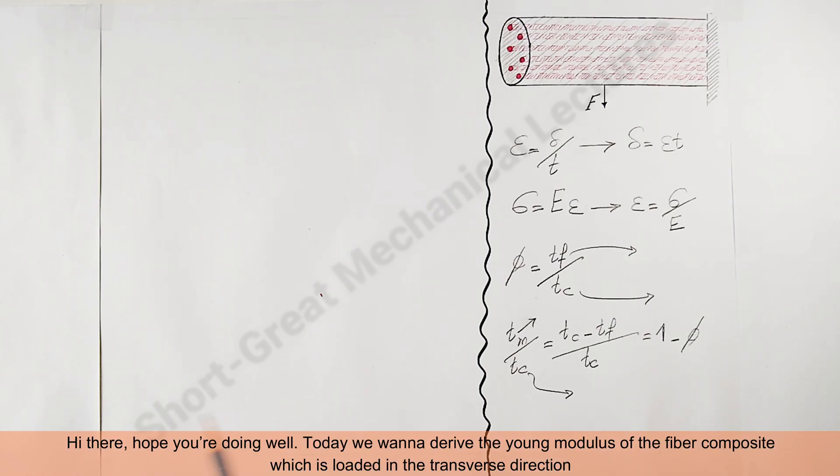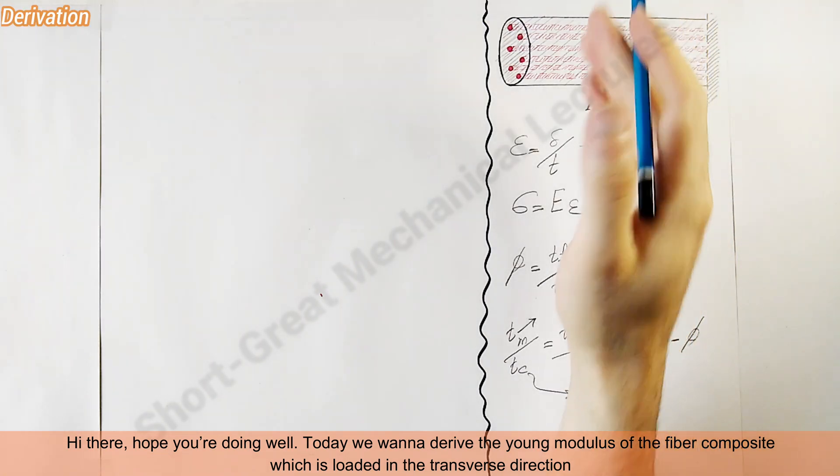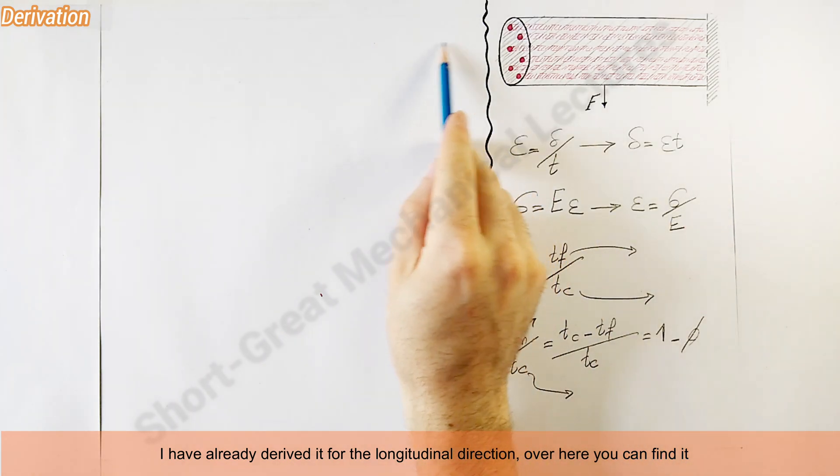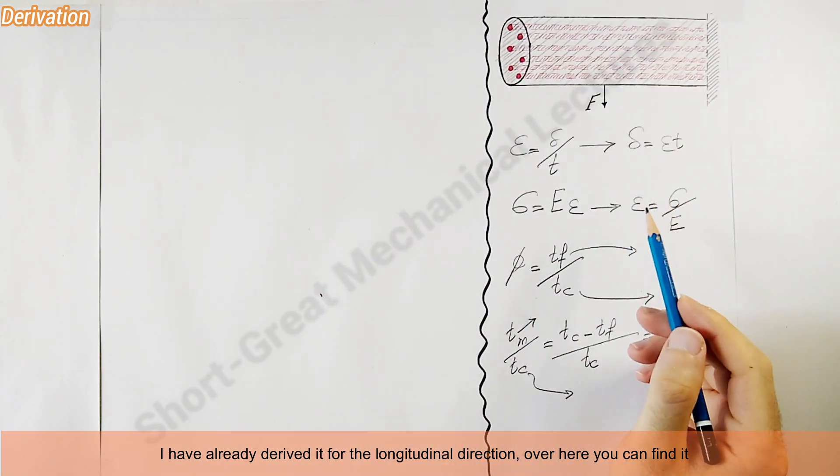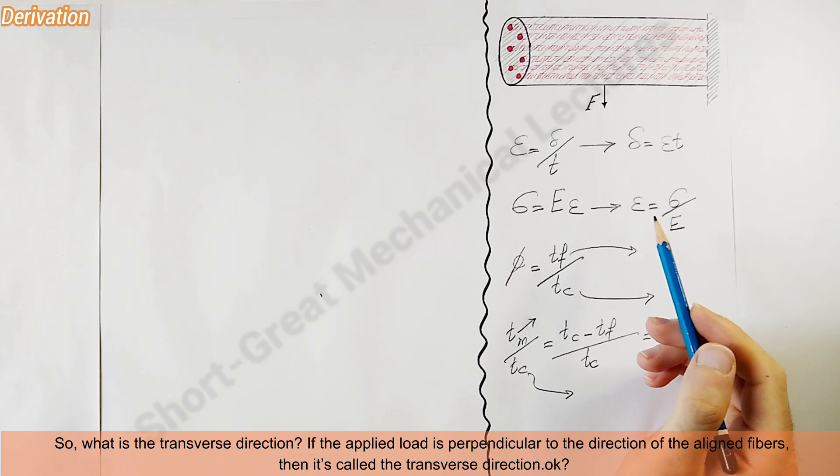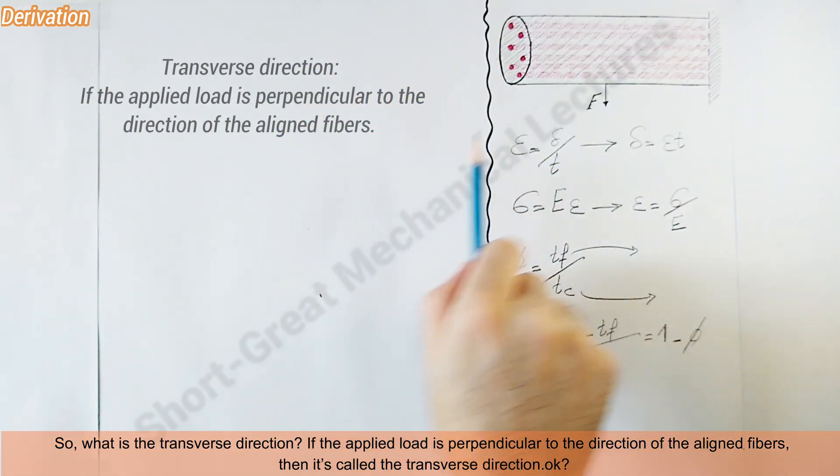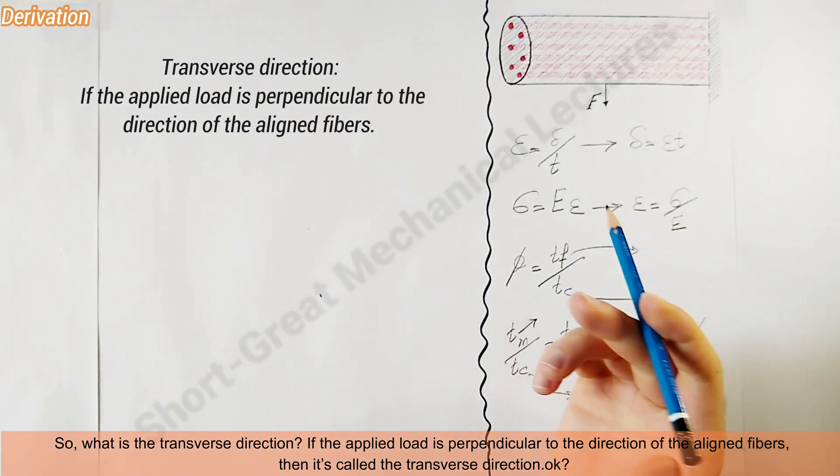Hi there, hope you're doing well. Today we want to derive the Young's modulus of fiber composite which is loaded in the transverse direction. I already derived it for the longitudinal direction. So what is the transverse direction? If the applied load is perpendicular to the direction of the aligned fibers, then it's called transverse direction.